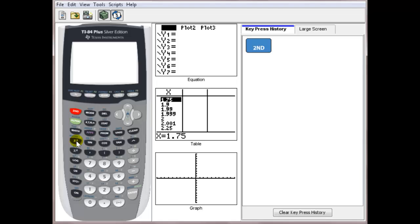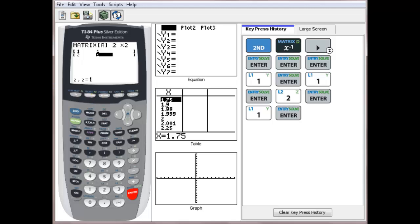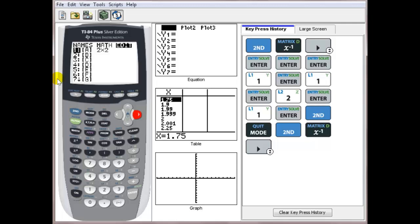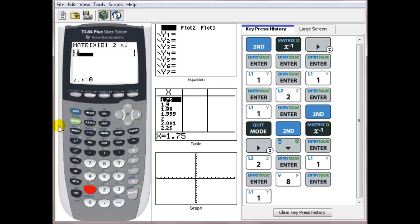Go in your matrix, go over to edit, we want to edit A. A is still a 2 by 2 matrix. Input your coefficients. Now you have to go in and put stuff into matrix B. 2nd matrix B, I want to edit that one. That is a 2 rows by 1 column matrix. I'm going to put in numbers, which are 8 and 1.